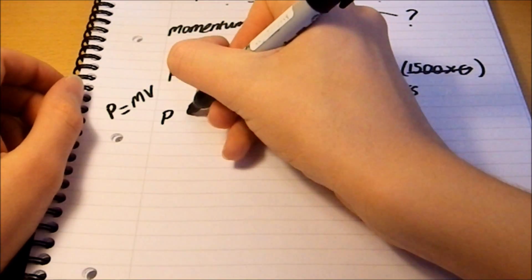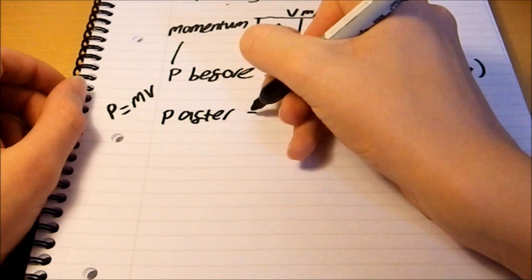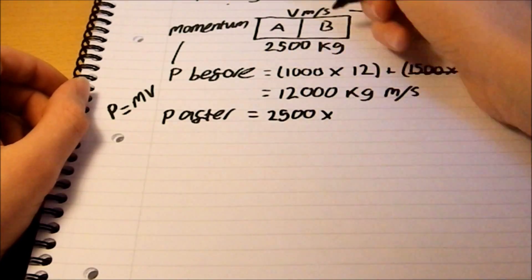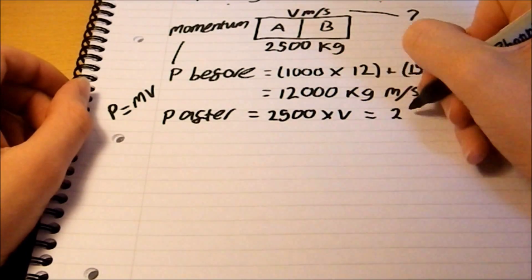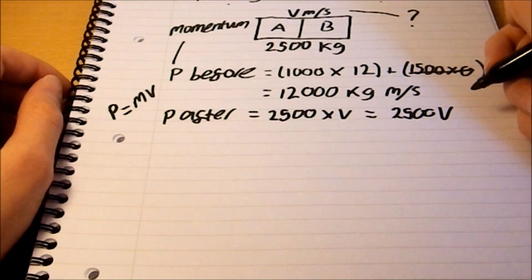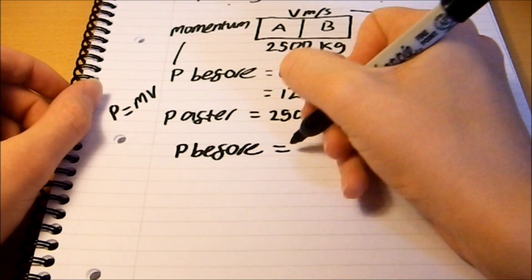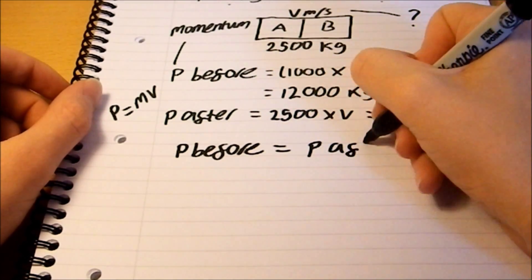And then we work out P after. And this is 2,500 kilograms times V, which equals 2,500V. But wait, doesn't P before equal P after?